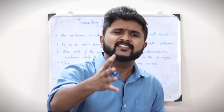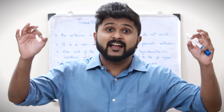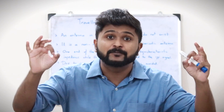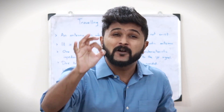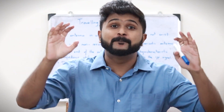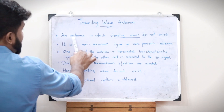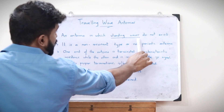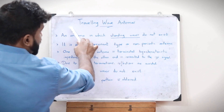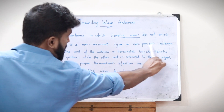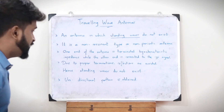Traveling wave antennas, just like the name suggests, are a kind of antenna which produce traveling waves — that is, standing waves are absent in such kind of antenna. Therefore, it is a non-resonant or a non-periodic type of antenna, where standing waves do not exist.